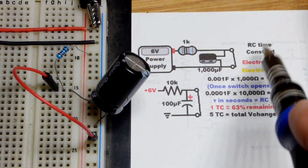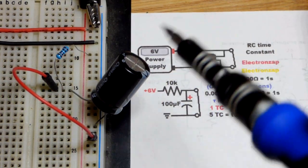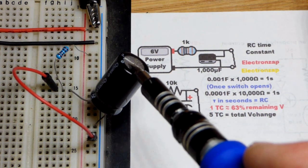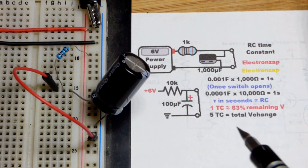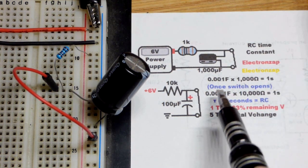So now in this video we're going to talk about the RC time constant. When you have a capacitor that's either charging or discharging from one voltage to another through a resistor, you get the RC time constant.